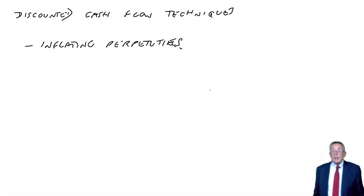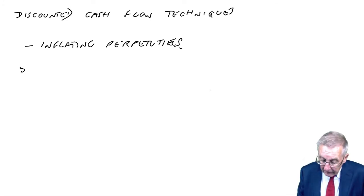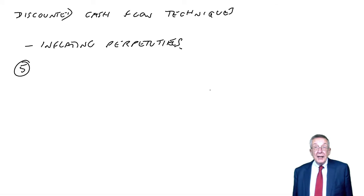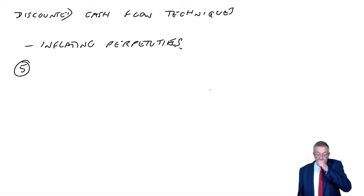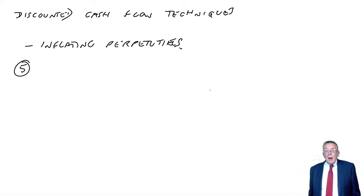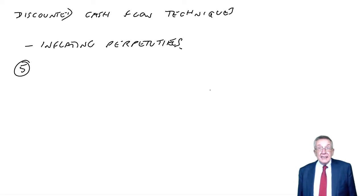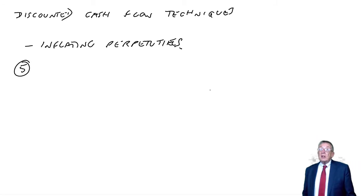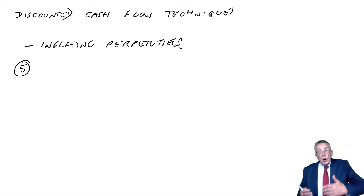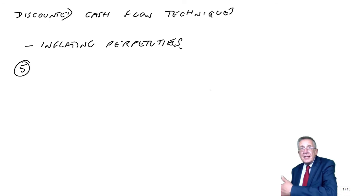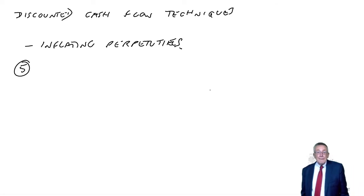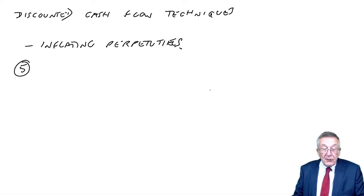I'll explain with example five. In example five, cash flows have been forecast at 5,000 a year in perpetuity. And if that was the end of it, that would be easy — an equal amount each year. But we're told the cash flows are inflating at 4% a year, and that's what creates the problem. In one year it would be 5,000 plus 4%; in two years, 5,000 plus another 4%; in three years, another 4%, and so on. We can't discount in the normal way. We want to discount at the cost of capital of 20%.